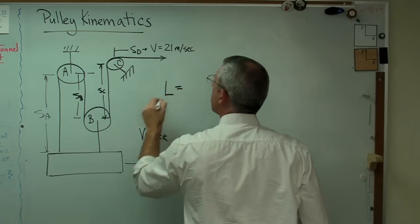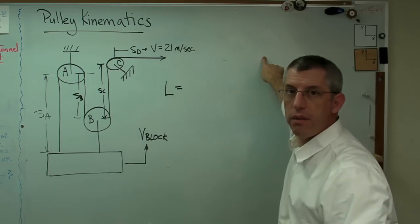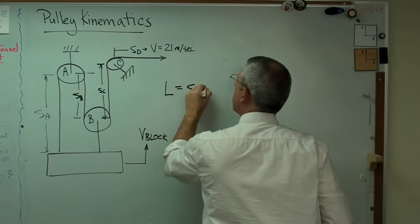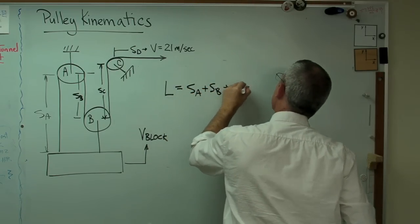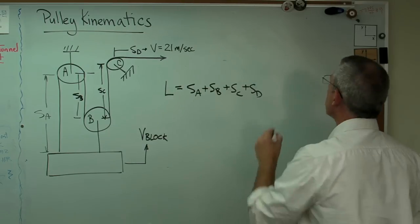The length of the rope in total, whole length from here all the way through out to wherever the end of it is, the winch maybe, is equal to SA plus SB plus SC plus SD. Now, all those are going to change with respect to time, so I'm grouping those.